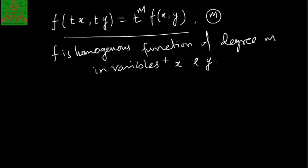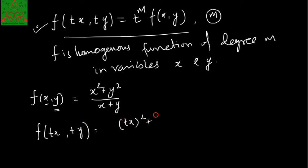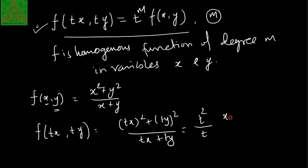So in that way also we can say that the given function is homogeneous. For example, let us say f(x,y) = (x² + y²)/(x + y). Here, if we replace x with tx and y with ty, we get (tx)² + (ty)² upon (tx + ty). In the numerator t² is common, in the denominator t is common, and all other expressions remain the same.